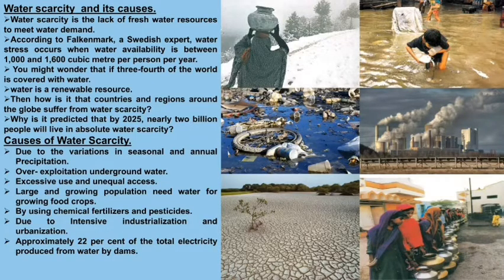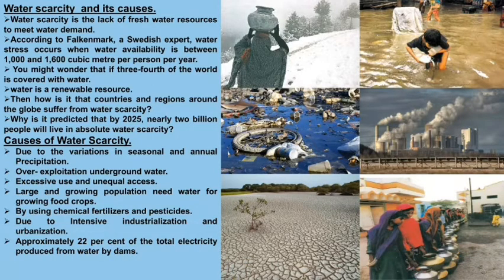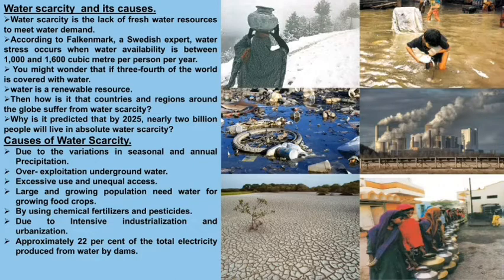To summarize: water scarcity means less than 1,000 cubic meters per person per annum; water stress means between 1,000 and 1,600 cubic meters; and water availability means more than 1,600 cubic meters per annum. Nature has provided us a large quantity of renewable water on Earth.